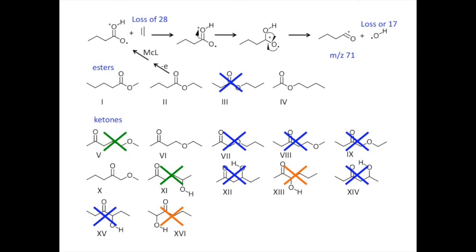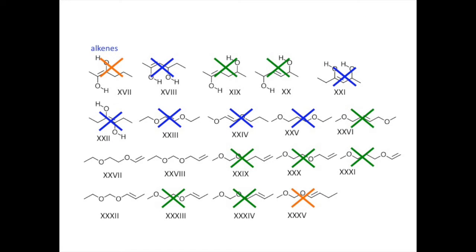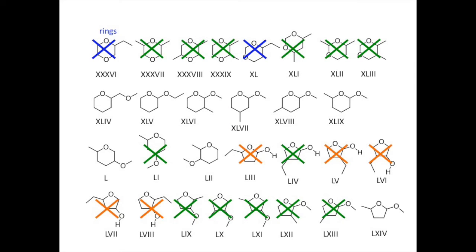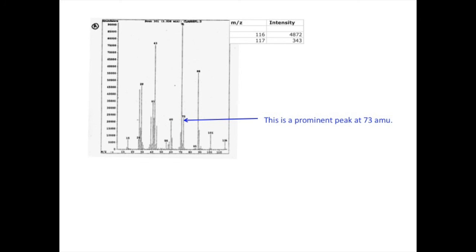Each of these esters and two of the ketones can follow similar pathways to produce a charge fragment at 71. The other candidates cannot. Among the alkenes, structure 17 and 35 can also be eliminated for the same reason. Several of the five-member ring compounds also do not lead to a peak at 71.